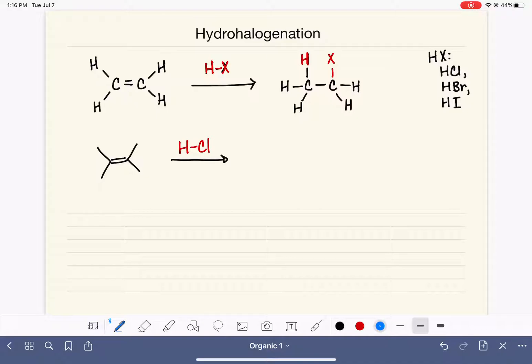In this reaction, the carbon-carbon double bond, which is very nucleophilic, reaches out and attacks the hydrogen of the HX molecule, and that causes the hydrogen-chlorine bond to break. The pi electrons from the carbon-carbon double bond are being used to form a new bond to the hydrogen. We are creating a bond between the carbon atom and the hydrogen of the HCl.